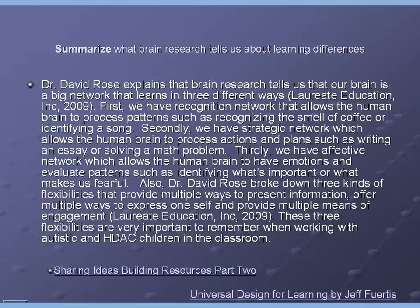Thirdly, we have the affective network, which allows the human brain to have emotional and evaluative patterns such as identifying what's important or what makes us fearful. Dr. David Rose also broke down three kinds of flexibilities that provide multiple ways to present information, offer multiple ways to express oneself, and provide multiple means of engagement.